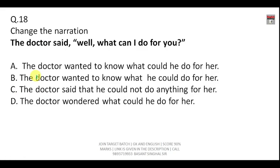Change the narration: 'The doctor said, Well, what can I do for you?' The reporting verb changes to 'wanted to know,' 'I' changes to 'he' (referring to the doctor), and 'can' changes to 'could.' The correct indirect speech is: 'The doctor wanted to know what he could do for her.' The answer is B.